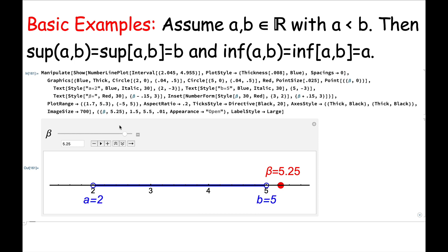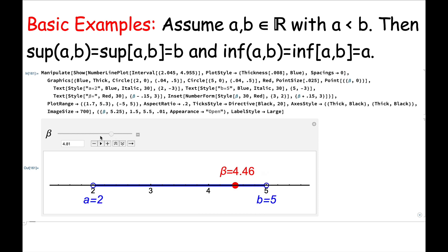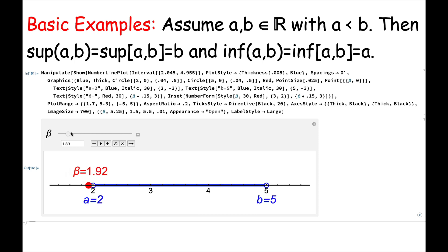Here is that interval, shaded in blue. We see beta set to be 5.25 initially — that is not the sup yet. It is an upper bound, but it's not the least upper bound. If beta is just barely less than 5, it is no longer an upper bound of this set. It's only when beta equals 5 exactly that we get the least upper bound, the sup of E. On the other hand, the greatest lower bound — the inf of the set — is when beta equals 2. If beta is less than 2, it's a lower bound but not the greatest lower bound. If beta is bigger than 2, it's no longer a lower bound of this open interval from 2 to 5.